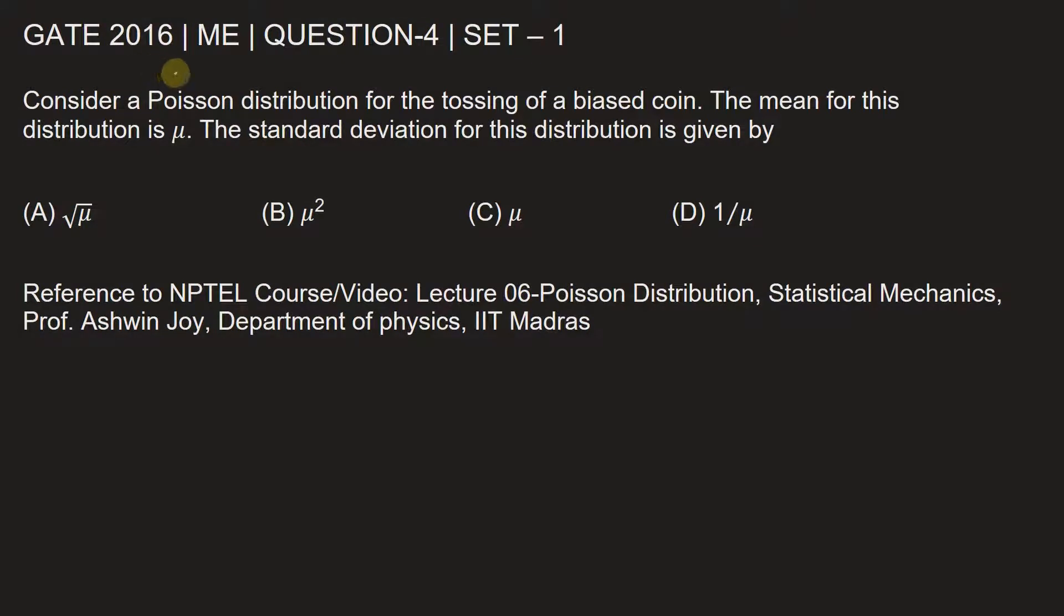This question is from GATE 2016 Mechanical Engineering paper, Set 1, Question number 4. Consider a Poisson distribution for the tossing of a biased coin. The mean for this distribution is μ. The standard deviation for this distribution is given by?